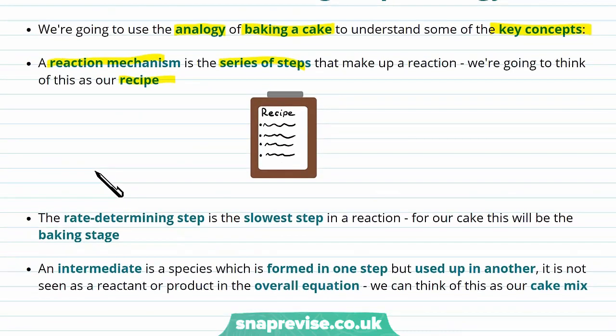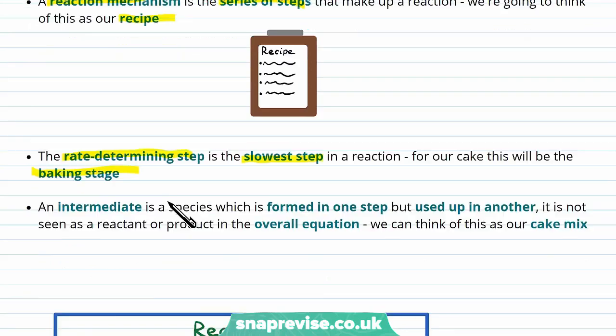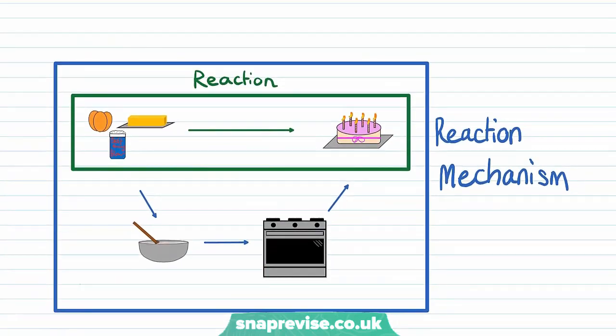The next key bit of terminology, and what this video is all about, is the rate determining step. This is the slowest step in a reaction. For our cake analogy, this will be the baking stage. Taking all the ingredients and mixing them together into the cake mix could take, say, five minutes.